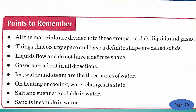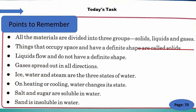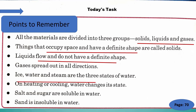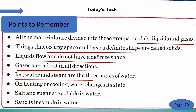Come to the next page — page number 70. Don't forget to write today's task on this page. Here are three points to remember: all materials are divided into three groups — solids, liquids and gases. Things that occupy space and have a definite shape are called solids. Liquids flow and do not have a definite shape. Gases spread out in all directions. Ice, water and steam are the three states of water. On heating or cooling, water changes its state. Salt and sugar are soluble in water, whereas sand is insoluble in water.